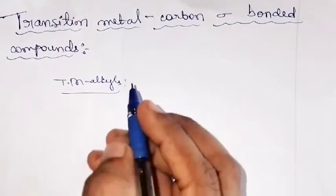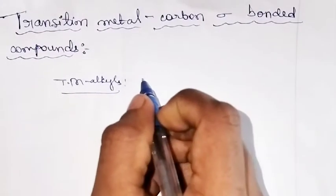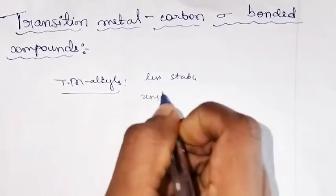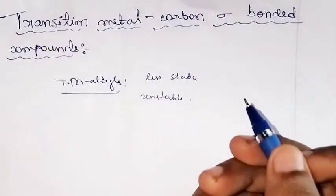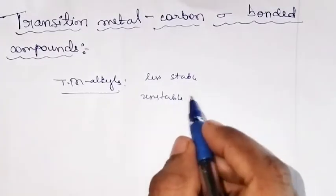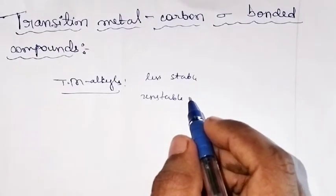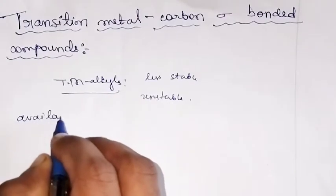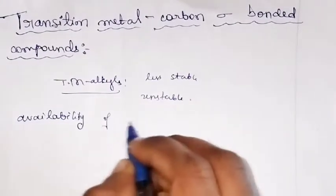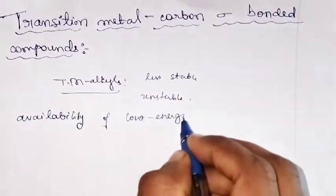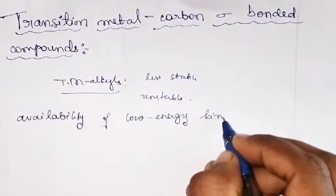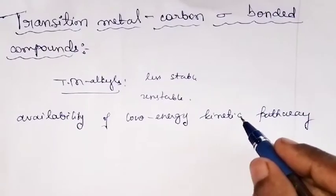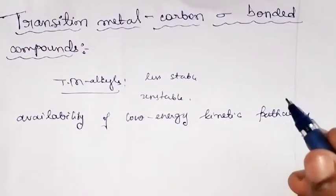Transition metal alkyls are less stable — unstable, I could say. They are usually unstable because there is an availability of a low energy kinetic pathway.